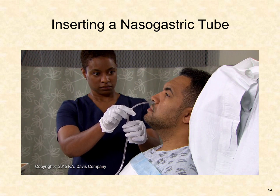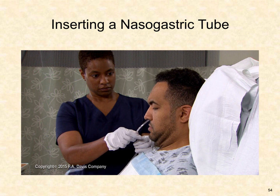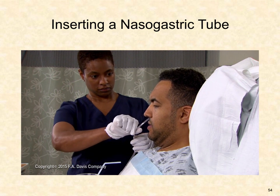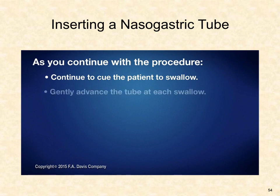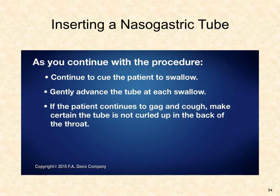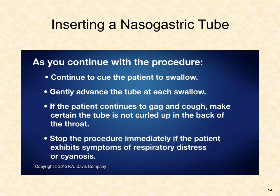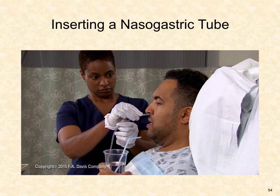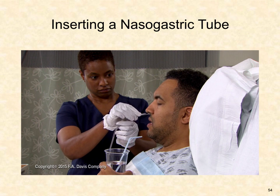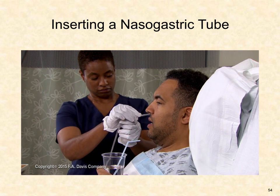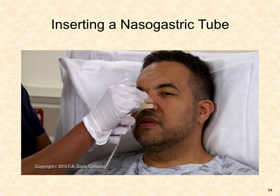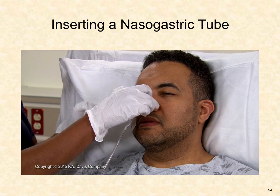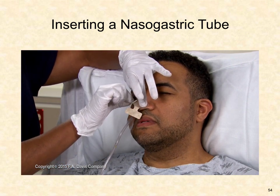Encourage the patient to take a couple of deep breaths and relax. Then instruct the patient to flex the head forward slightly, drink a sip of water, and swallow. Continue to cue the patient to swallow and gently advance the tube each time they swallow. If the patient continues to gag and cough, use a pen light and tongue blade to ensure the tube is not curled in the back of the throat. If the patient exhibits respiratory distress or cyanosis, stop the procedure and withdraw the tube immediately. Monitor the depth of tube insertion, noting when the marked level is reached, and observe for return of stomach contents. Once in place, secure the tube by taping it to the patient's nose, ensuring it does not press against the naris.